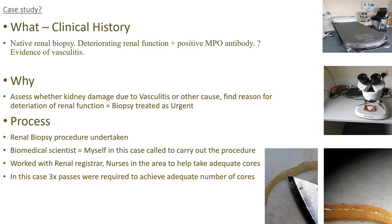The biopsy was undertaken. The biomedical scientist — in this case himself — was called down to carry out the procedure. The cores were taken; I identified them as you can see in the bottom two slides. The renal biopsy contained glomeruli — the small red dots you can see in the tissue — which I'm pointing out with a small knife in the last image at the bottom. I worked with the renal registrar and the nurses in the area to help take adequate cores. In this case, three passes were required to achieve the adequate number of cores.